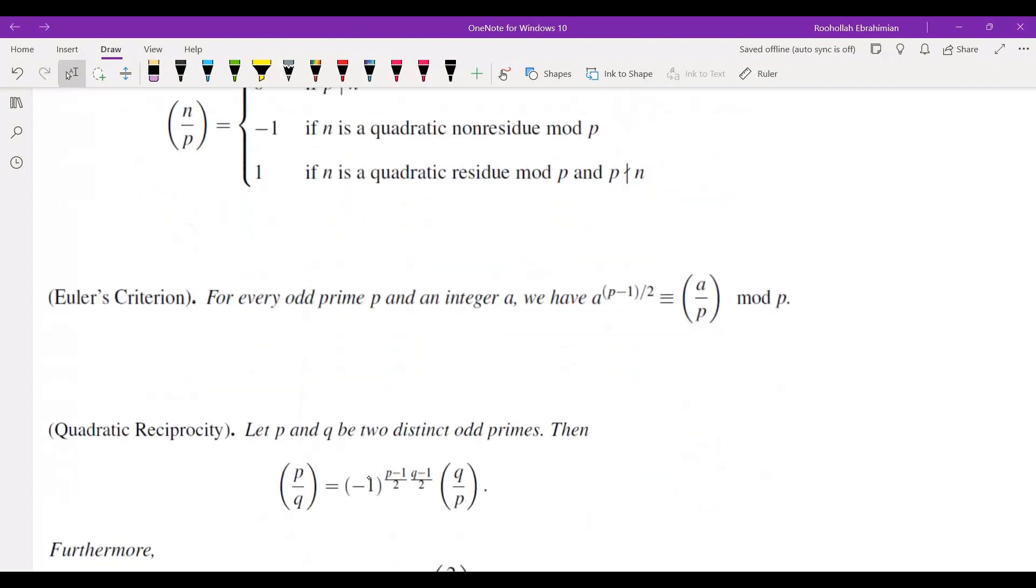So I'm going to state these two theorems and then we will do an example. For every odd prime P and an integer A, A to the power of P minus 1 over 2 is A over P mod P. So this is one way of evaluating A over P, the Legendre symbol.